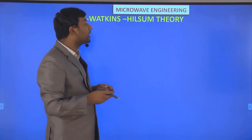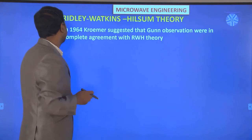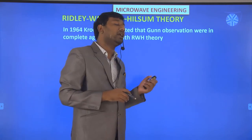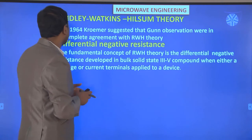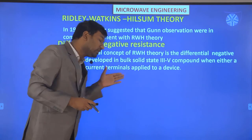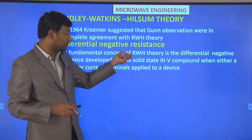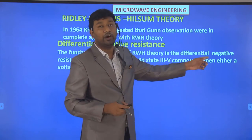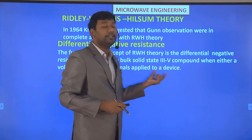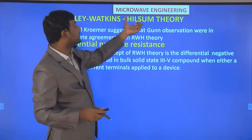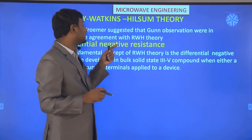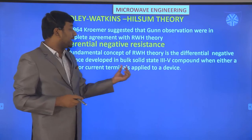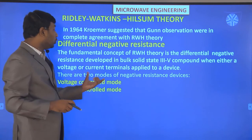Now coming to the Ridley-Watkins-Hilsum (RWH) theory. In 1964, Kroemer suggested that Gunn's observations were in complete agreement with RWH theory. The fundamental concept of RWH theory is the differential negative resistance, which is developed in bulk solid-state 3-5 compounds when either a voltage or current terminal is applied to a device.